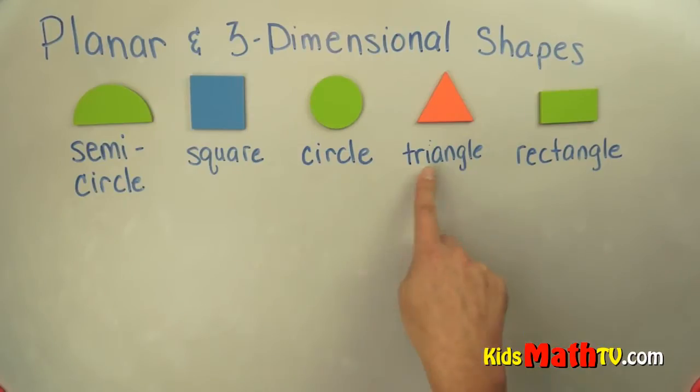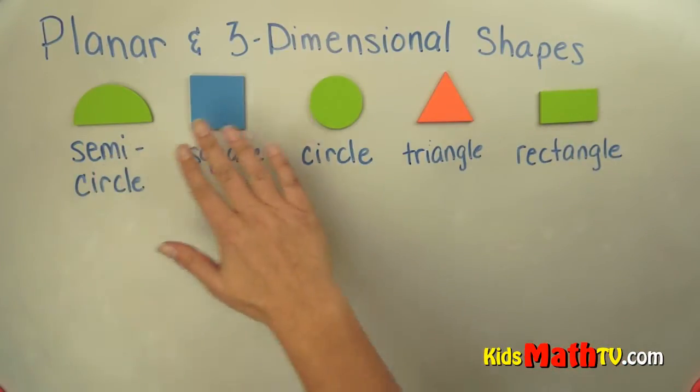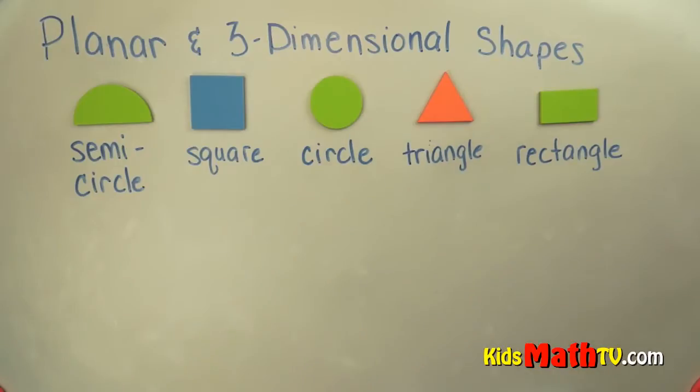This is a circle, a triangle, and a rectangle. One side is longer than the other. So those are the planar shapes, the flat shapes.